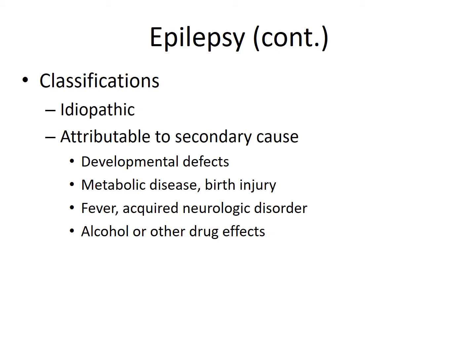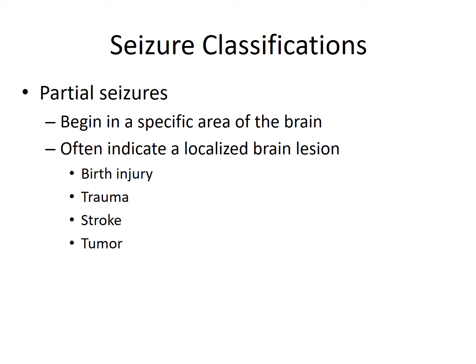The classifications of epilepsy include the idiopathic type, which is usually due to a secondary cause such as a developmental defect, metabolic issue, birth injury, fevers, an acquired neurological disorder, or alcohol and drug effects. Partial seizures begin in a specific area of the brain — a localized brain lesion that blocks or disturbs normal electrical conduction, leading to a seizure.